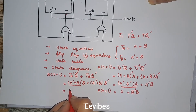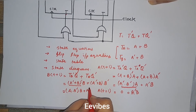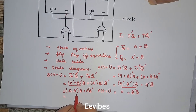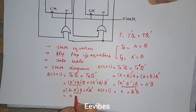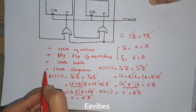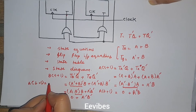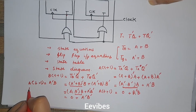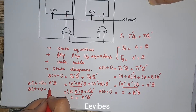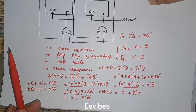Applying De Morgan's theorem, (A' + B)' becomes A · B'. This gives A · B' · B for the first term, and the second term expands to A' · B' + B · B'. Since B · B' = 0, both zero terms drop out, and we are left with A'B'. Therefore B(t+1) = A'B'. So A(t+1) = A'B and B(t+1) = A'B'.